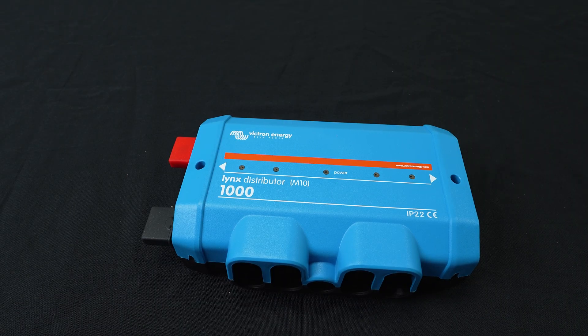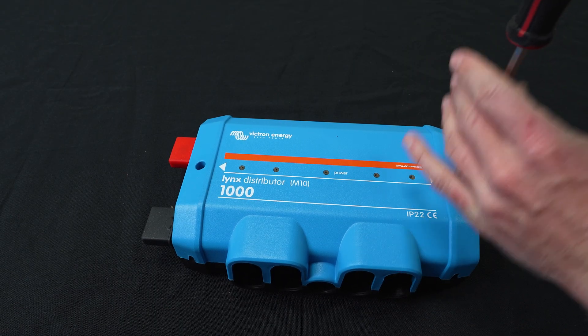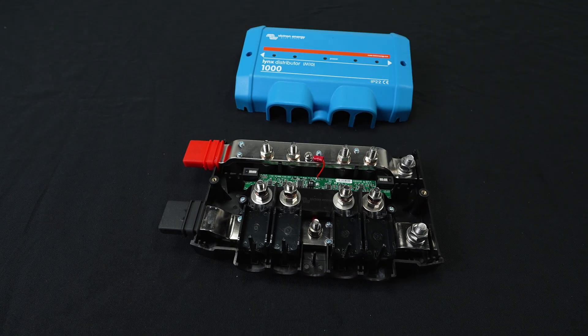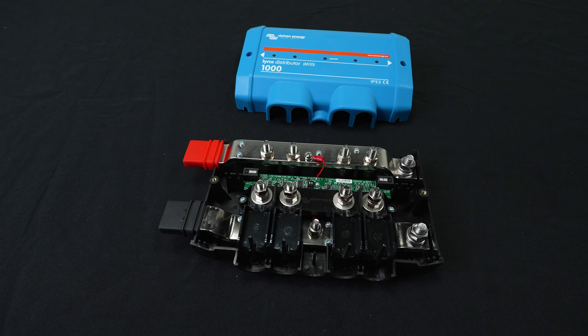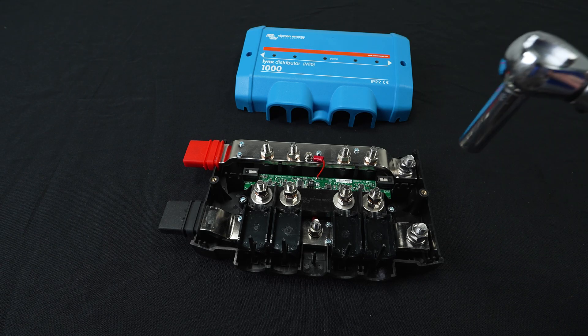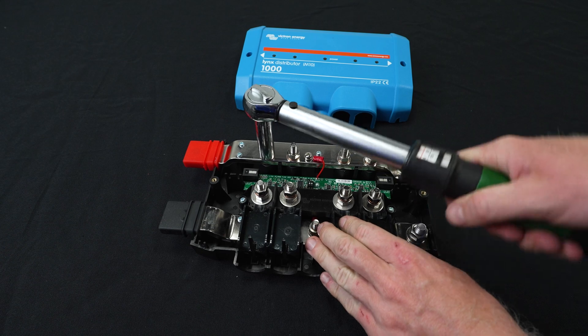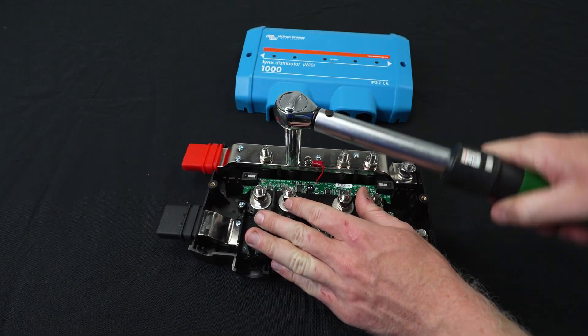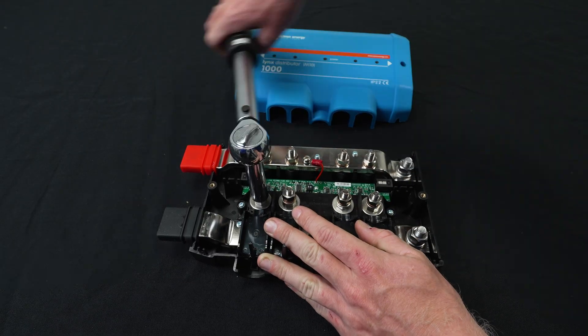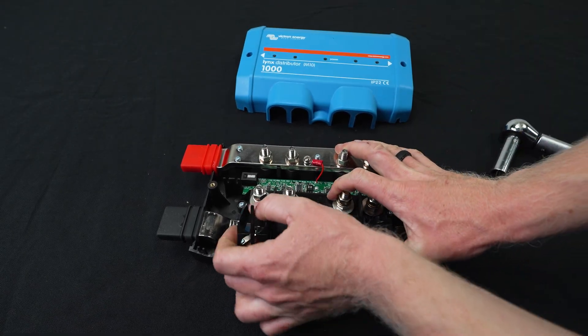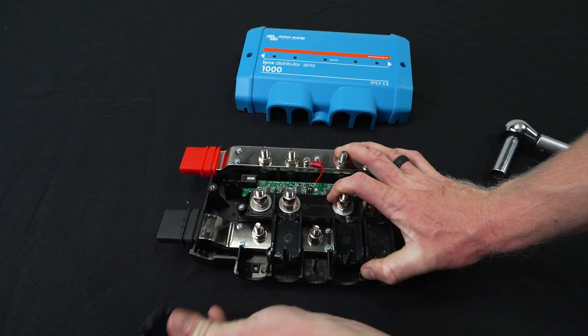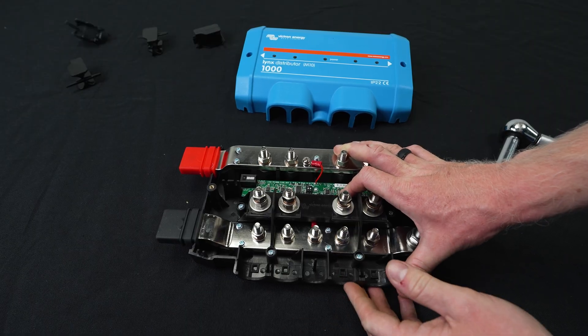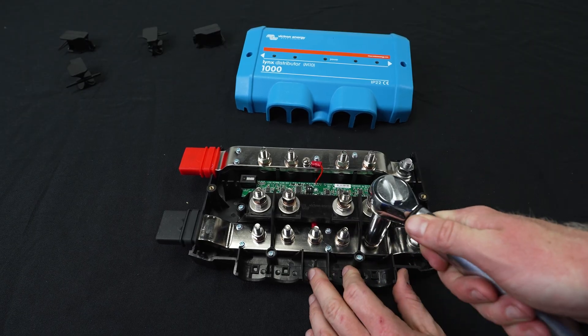So first thing we're going to unscrew the top and to prepare the distributor for installation. First thing we're going to do is remove all the nuts, and we'll also remove the plastic tabs so we can access the grounds.